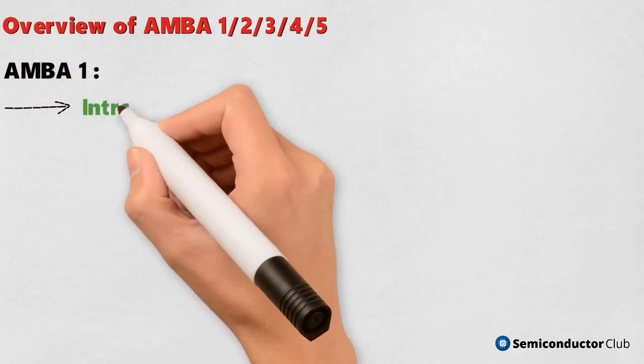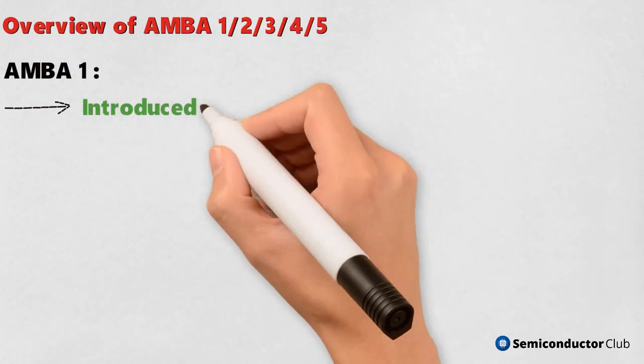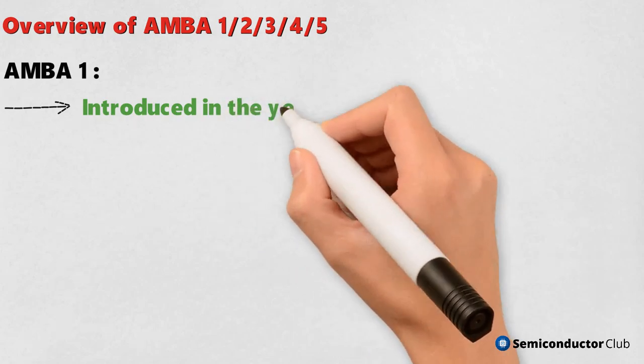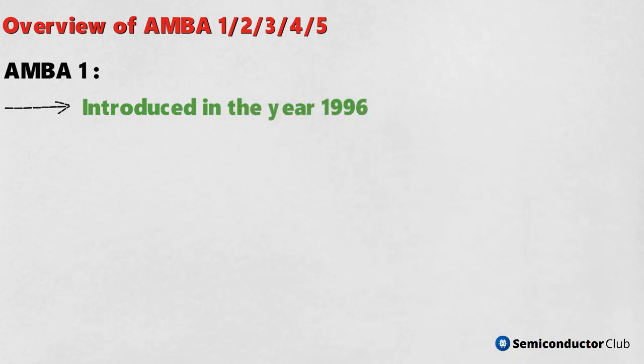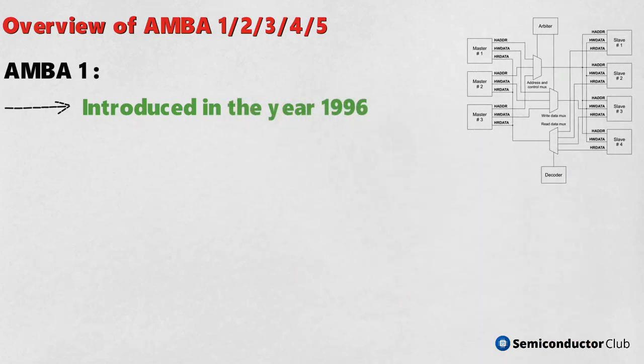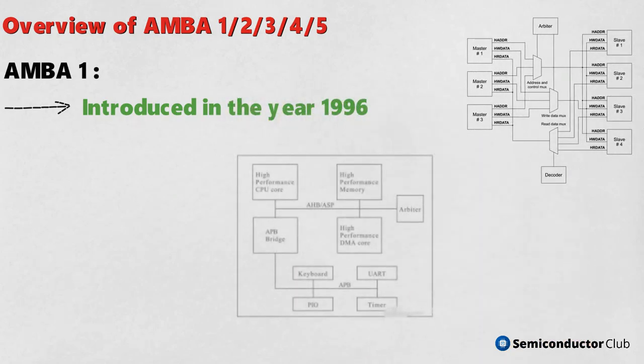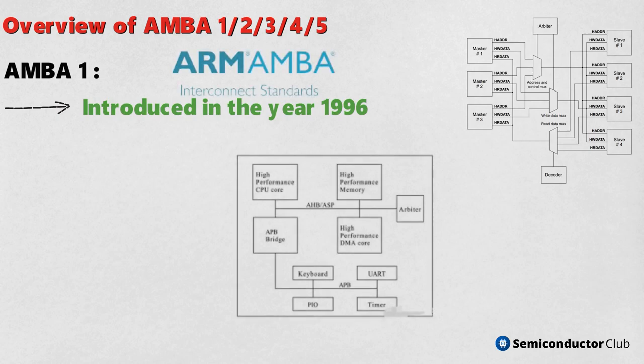AMBA 1, introduced in the year 1996, had only two buses named Advanced System Bus (ASB) and Advanced Peripheral Bus (APB). It was the first version introduced by ARM.